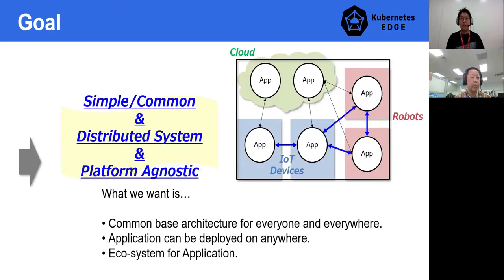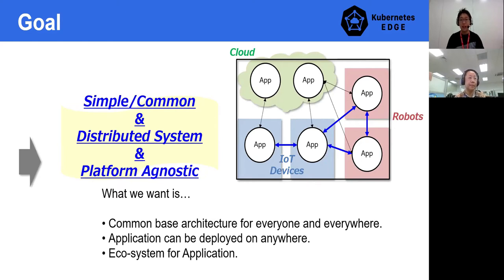We are proposing a cloud and edge common architecture. It is simple and common, and can support distributed systems. The application should be platform agnostic. In other words, once you get an application developed, you can run it wherever you like — cloud, edge — you don't even need to care. In the edge network, devices are connecting to each other directly as a distributed system to keep the performance.